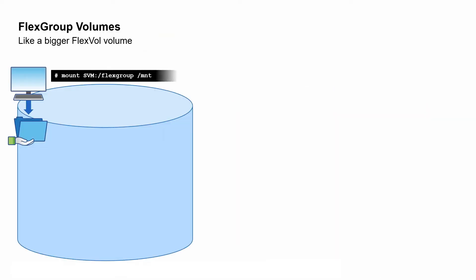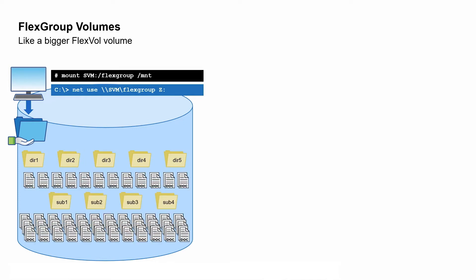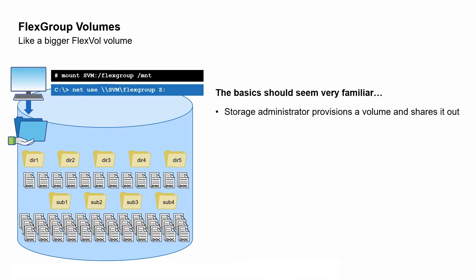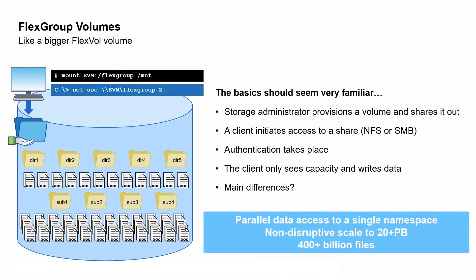When thinking about FlexGroup volumes, just think of them as bigger FlexVol volumes. The basics should seem very familiar: you provision a volume and share it out, a client authenticates, a user gets access, and data gets written or read. The main differences are fast parallel data access to a single namespace across multiple nodes, with non-disruptive scale up to 20 petabytes and 400 billion files.